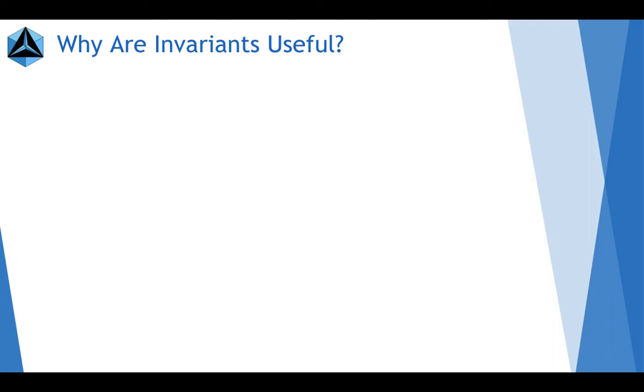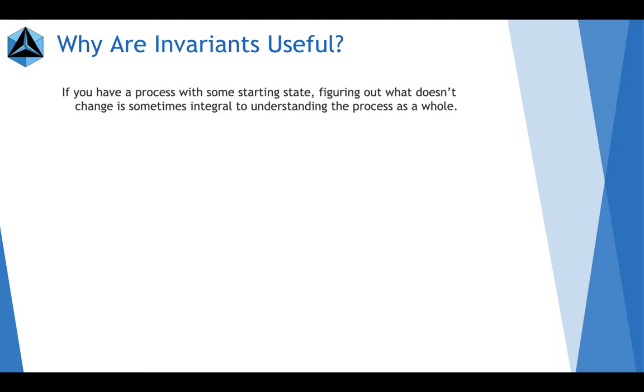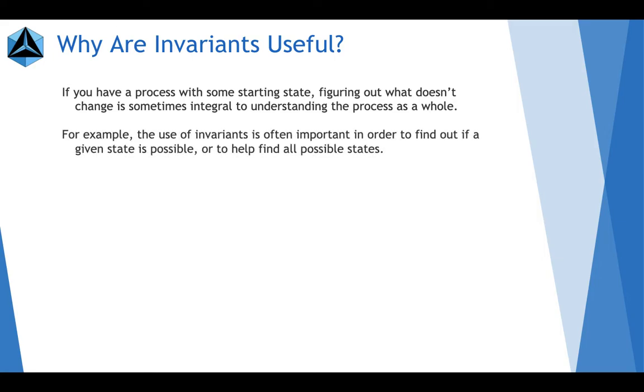Alright, so that's great and all, but why are they useful? If you have a process with some starting state, figuring out what doesn't change is sometimes very important to understanding how the process as a whole works. For example, the use of invariants is often important to find out if a given state is possible or to help find all possible states.